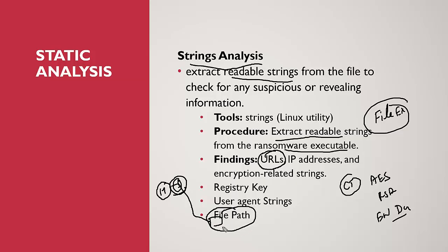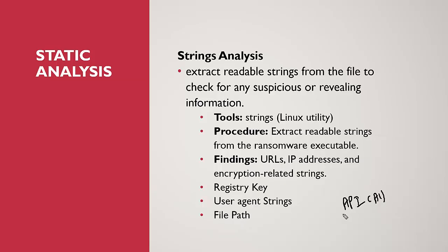We also look for file paths, which indicate which system files the ransomware is interacting with — for example, C:\Windows\System32. We look for registry keys, which indicate registry modifications. We also look for API calls — names of Windows API functions or system calls that hint at ransomware functionality. Keywords like 'Bitcoin' or 'decryptor' provide more context about the ransomware's operations. We can compare extracted strings against known ransomware samples or indicators of compromise using a threat intelligence platform, and use extracted URLs, IPs, or domains to gather more information about the ransomware infrastructure.